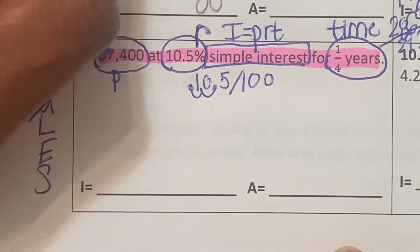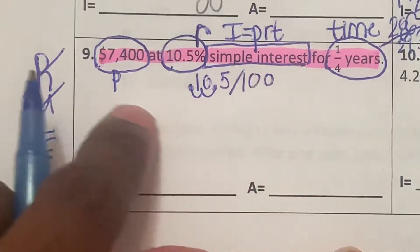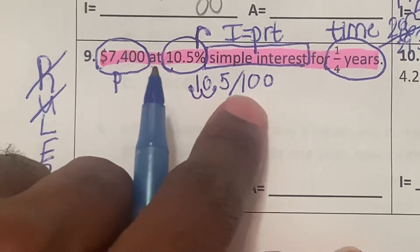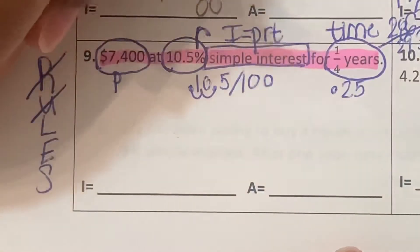We've got 0.105, we've got to multiply that by the 7,400. Because remember it's the interest equals P times the rate times the time. Also one-fourth is going to be 0.25 as a decimal.